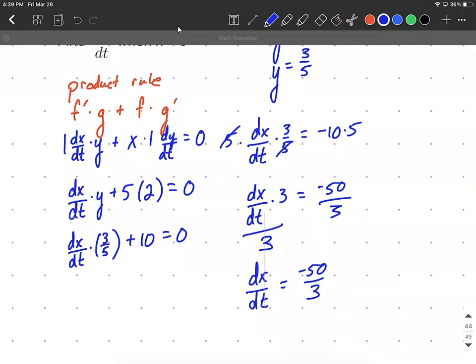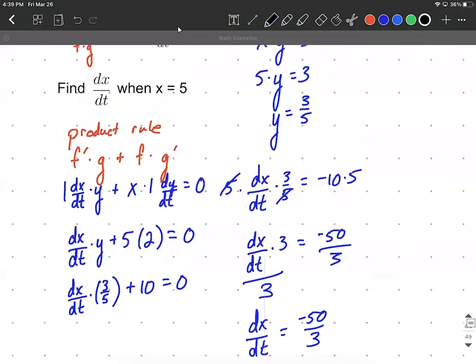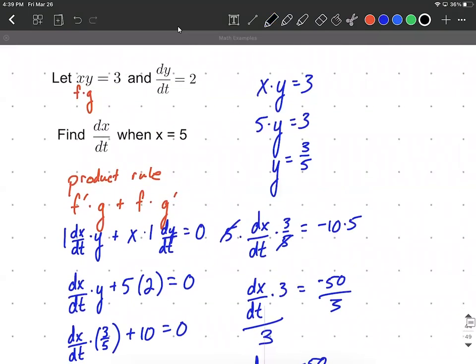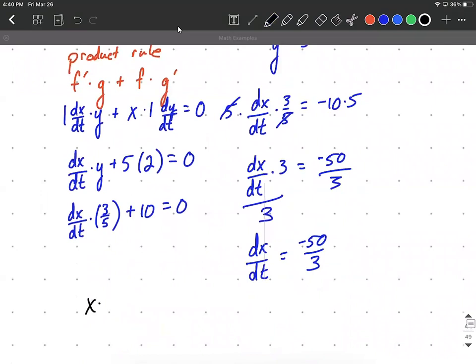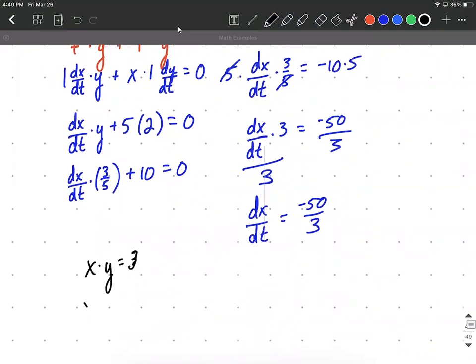I wanted to show you one other possible way to do this particular problem. Being that we started with x times y equals 3, and our goal was to find dx/dt, what we could do is we could first go ahead and get x on one side all by itself. So we could say x equals 3 divided by y.